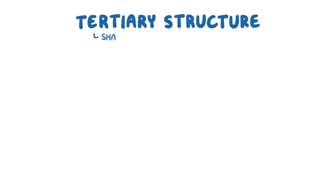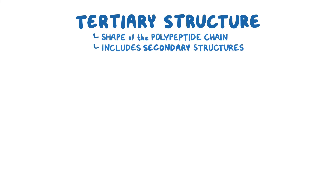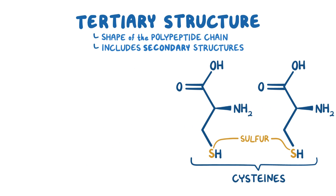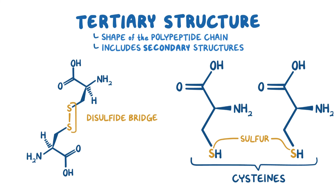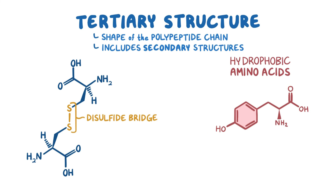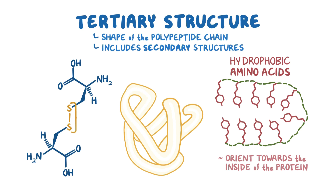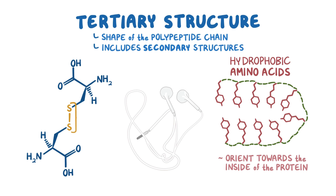Tertiary structure is the overall shape of the polypeptide chain, and it includes the secondary structures as well as other features. For example, two sulfur-containing cysteines can bind to form a disulfide bridge. Also, hydrophobic amino acids form bonds with one another and orient themselves toward the inside of the protein to avoid contact with water—it's like the hydrophobic amino acids are being a bit shy. Basically, the way a polypeptide chain twists and turns to form its tertiary structure is kind of like the way headphones get tangled up in your pocket.